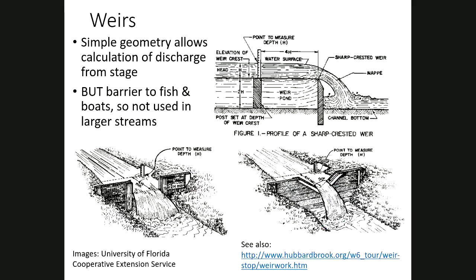For small streams you can build a weir — a simple channel geometry that takes advantage of hydraulics, essentially a mini dam with a drop below it. Because of their simple geometry, weirs have a very fixed relationship between water depth — which is easy to measure — and discharge over the weir. They're used a lot in small experimental watersheds and sometimes in urban engineered channels, but they make fish unhappy because fish can't swim over them easily, and they'd be a hazard for boats, tubers, or people on larger streams. So weirs don't tend to be used in larger waterways.